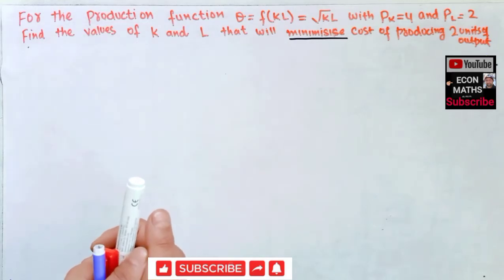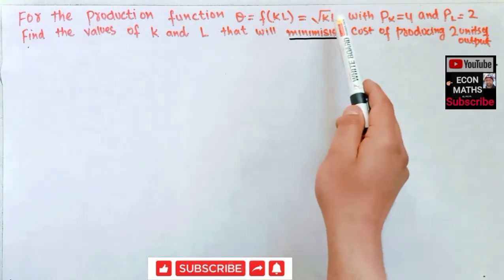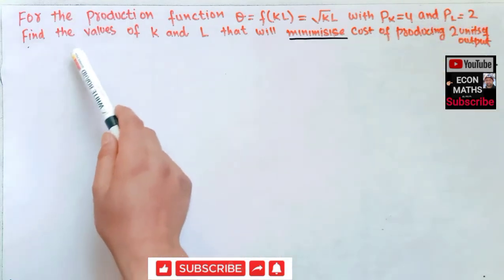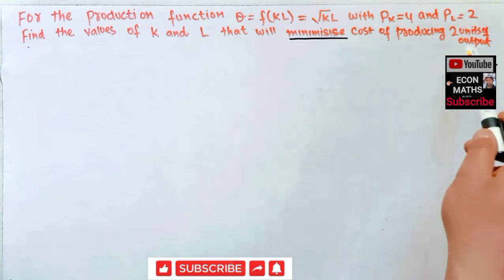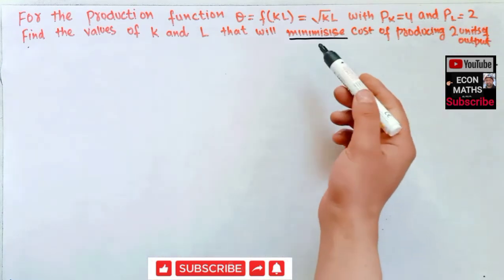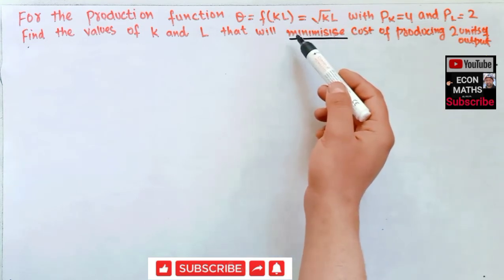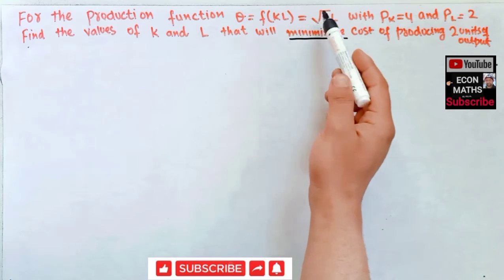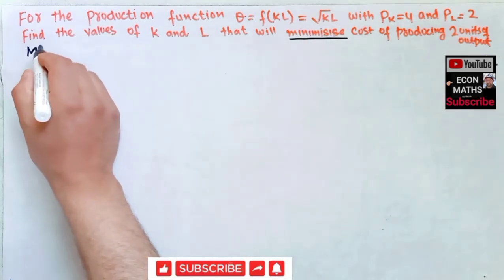Another question asked in the GATE Economics paper of 2021: for the production function q = √(KL), with price of capital r = 4 and price of labor w = 2, find the values of capital and labor that will minimize the cost of producing two units of output. We have to minimize the cost — this is a cost minimization problem — subject to the production constraint √(KL) = 2.